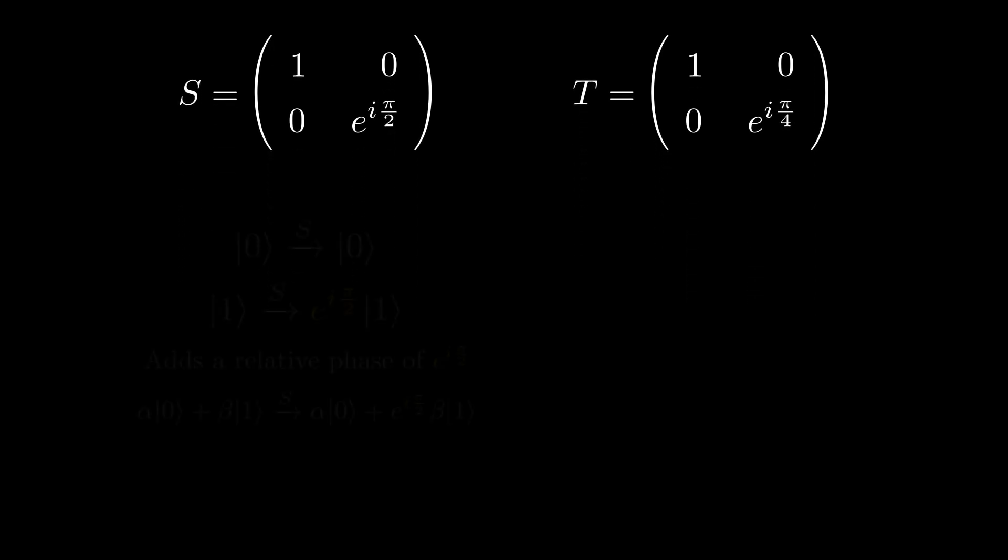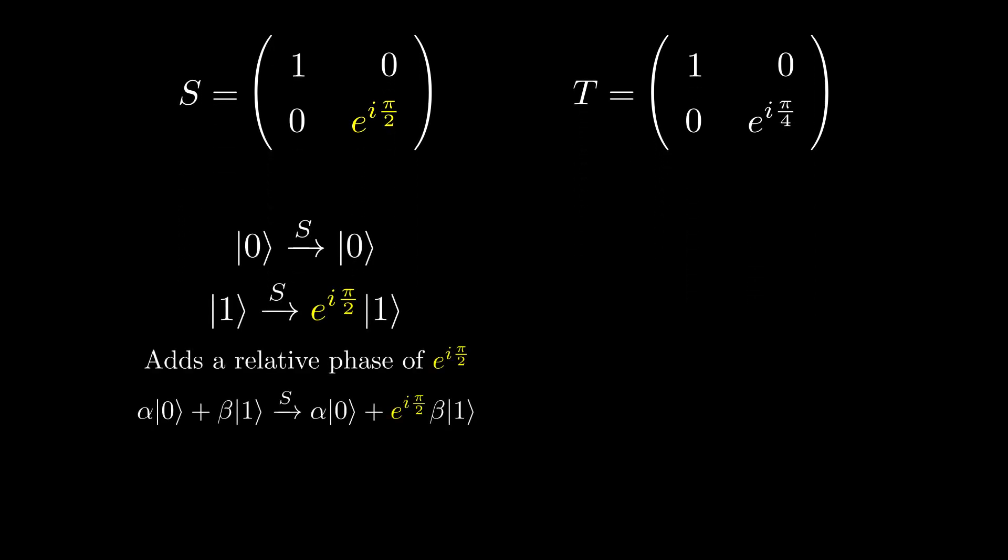The S gate adds a relative phase of pi on 2 radians. The T gate adds a relative phase of pi on 4 radians.